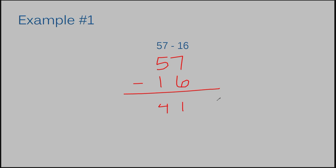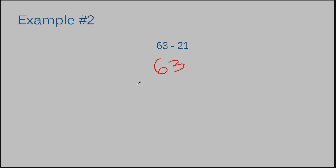Let's go on to example number 2: 63 minus 21. This is another example that's pretty easy to line up because both numbers only have 2 digits, so I'm just stacking the numbers directly on top of each other. Now let's subtract. If I have 3 of something and I take 1 away, how many do I have left? 2. So the answer to example number 2 is 42.